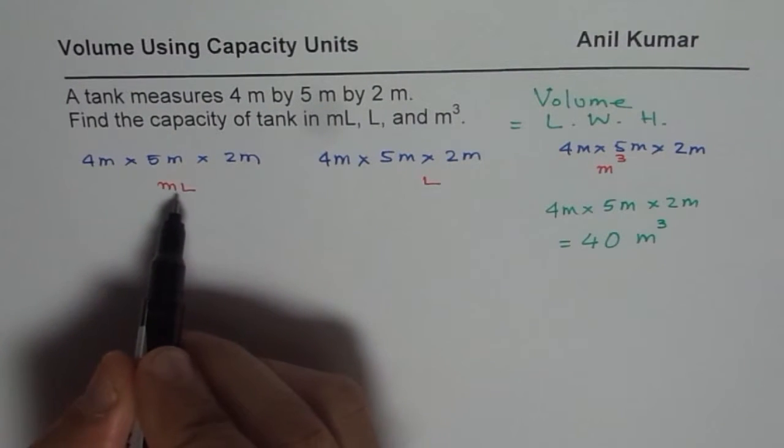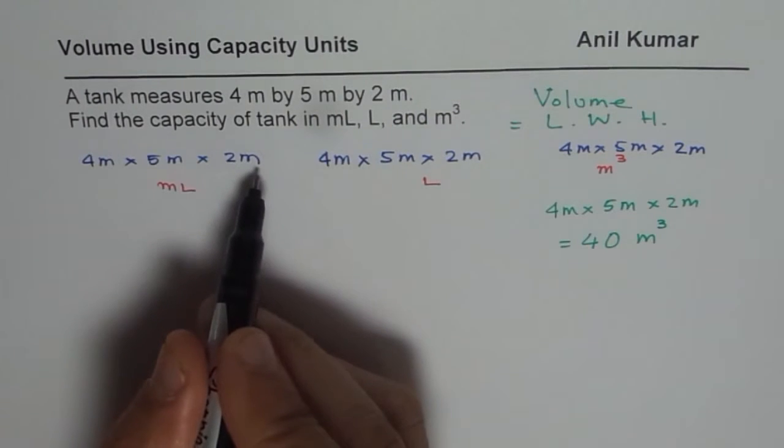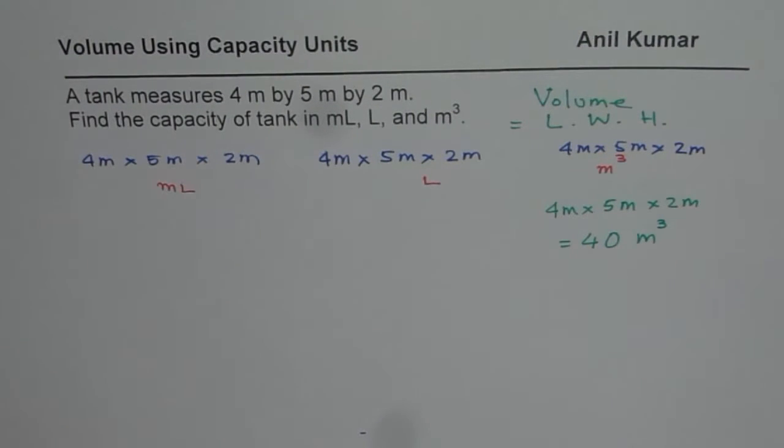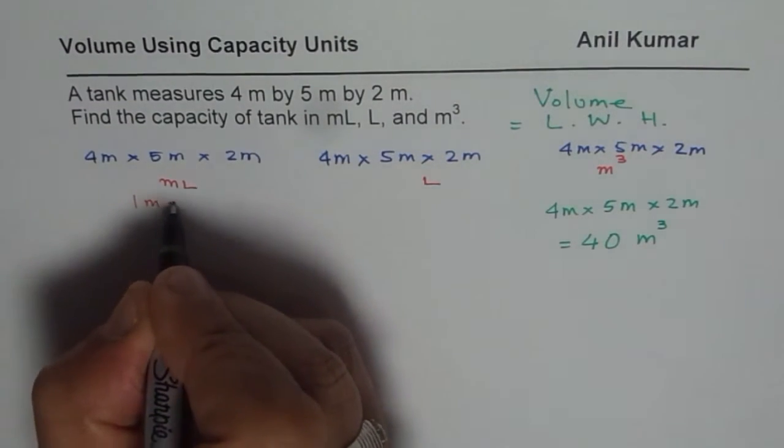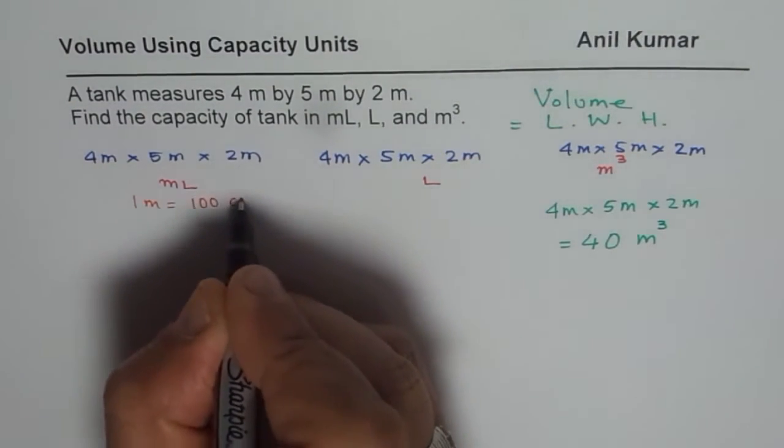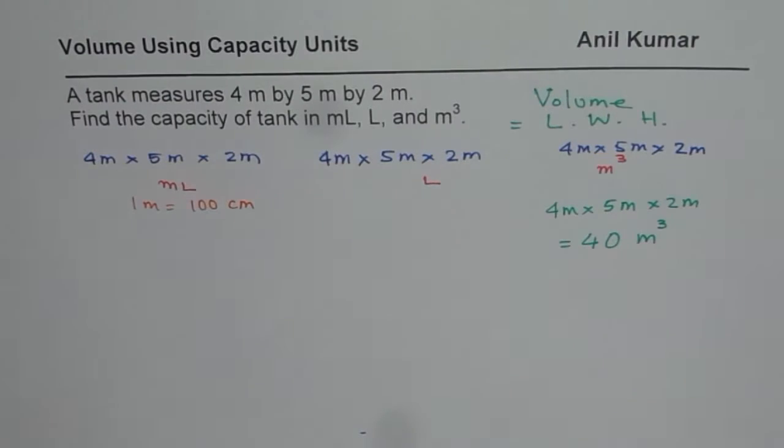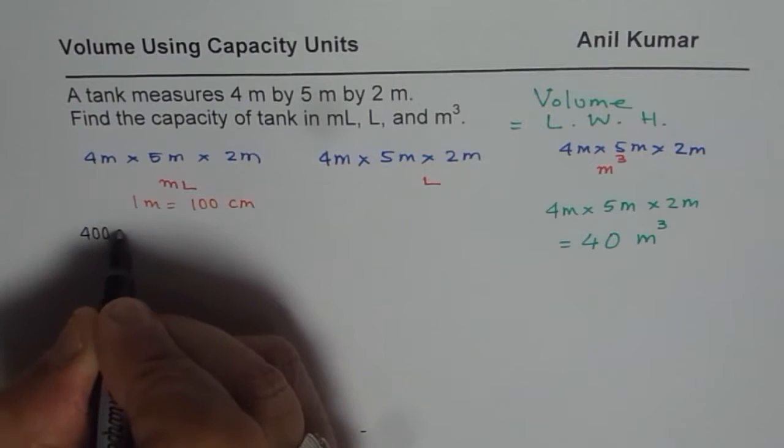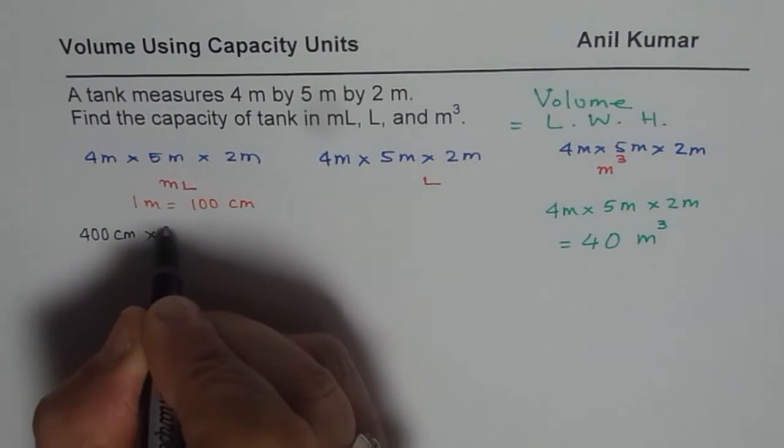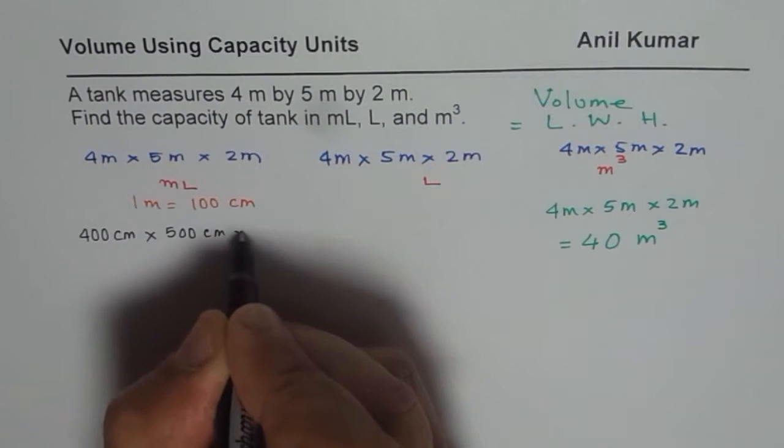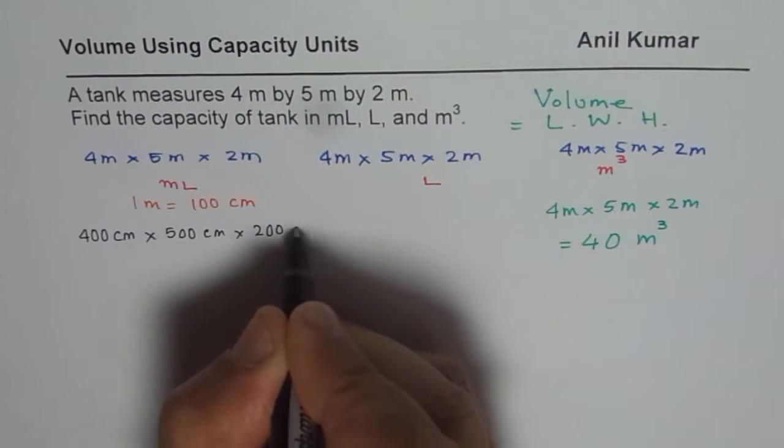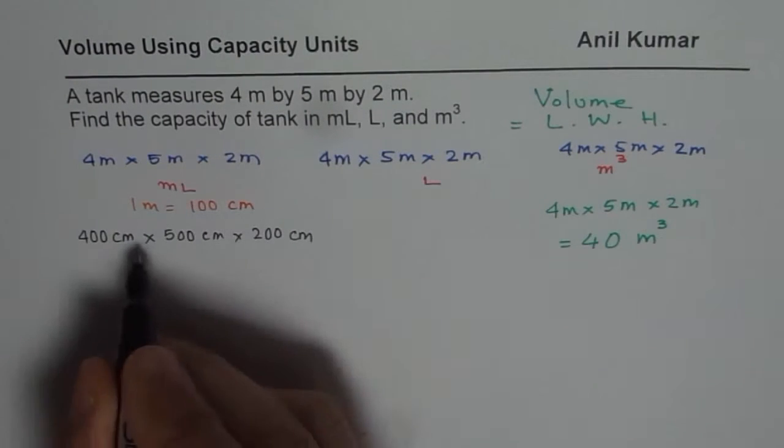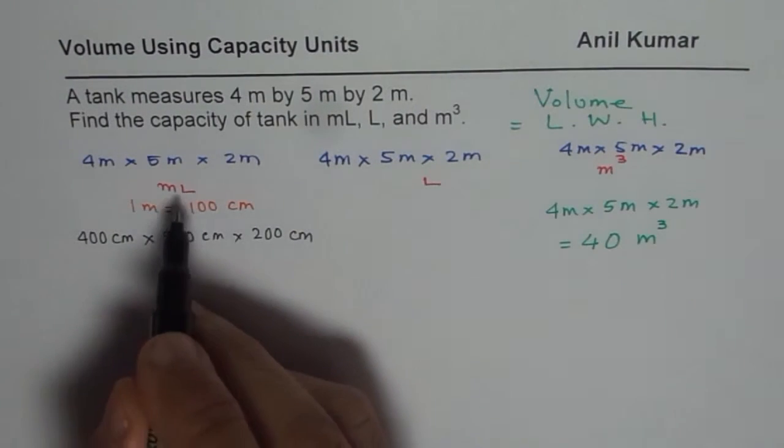When we are doing milliliters, the units are in centimeters. 1 meter is how many centimeters? Well, we know 1 meter is 100 centimeters. So we will convert them to centimeters. 4 meters will be 400 centimeters times 500 centimeters times 200 centimeters. So that is what we get. We are expecting a huge answer here for milliliters.